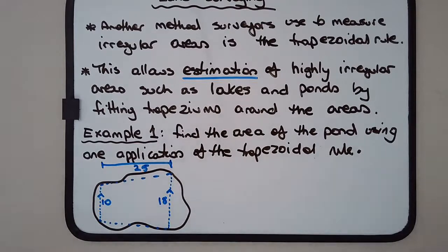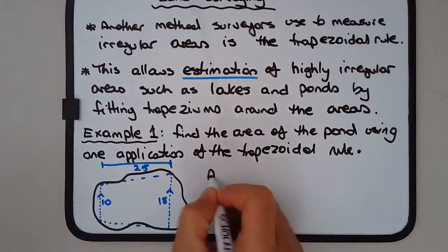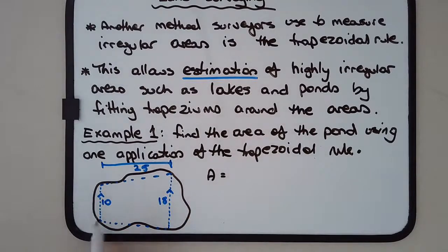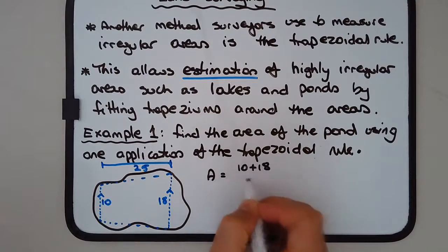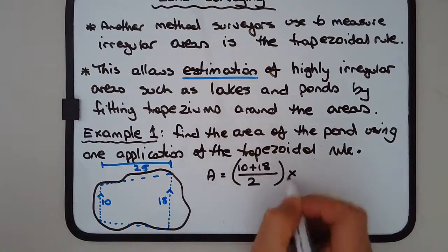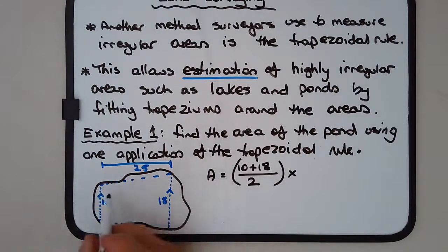This is where we need the formula for the area of a trapezium, and we've learned that already. The area equals the average of the two parallel lines, so it's going to be 10 plus 18 over 2, and we multiply that by the height of the trapezium. This is the perpendicular height, so the distance between the two parallel lines is 25 meters.